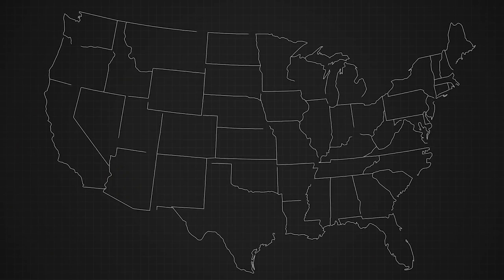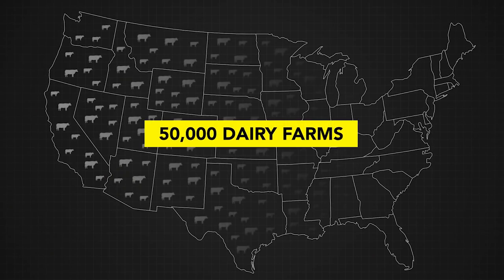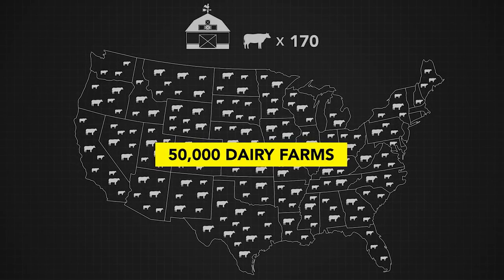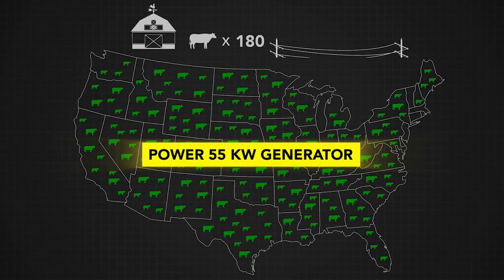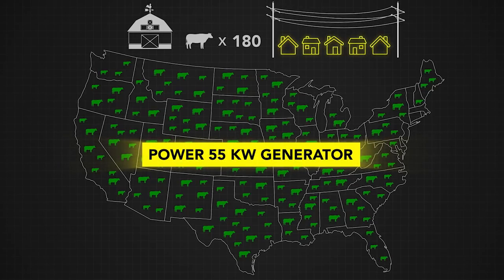For example, there are over 50,000 dairy farms in the U.S. The average farm has 180 cows, which produce enough methane to power a 55-kilowatt generator year-round. That's five households' worth of electricity per farm.